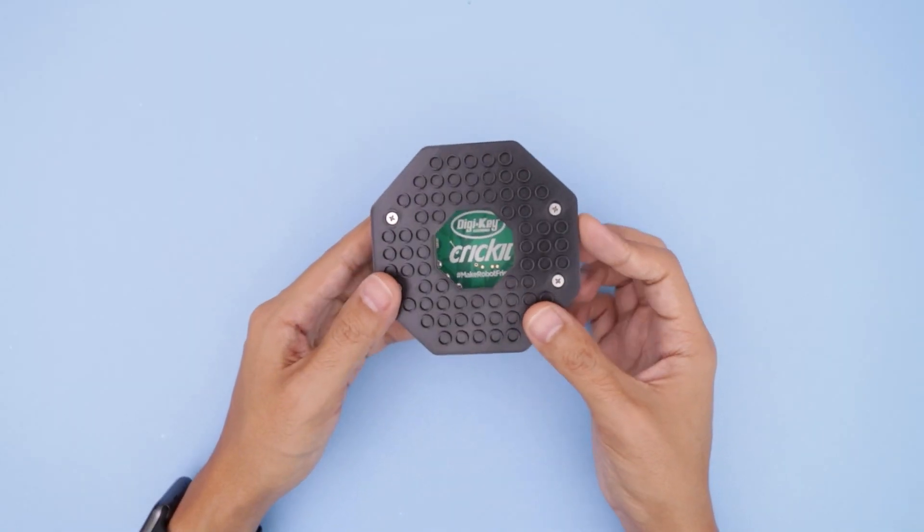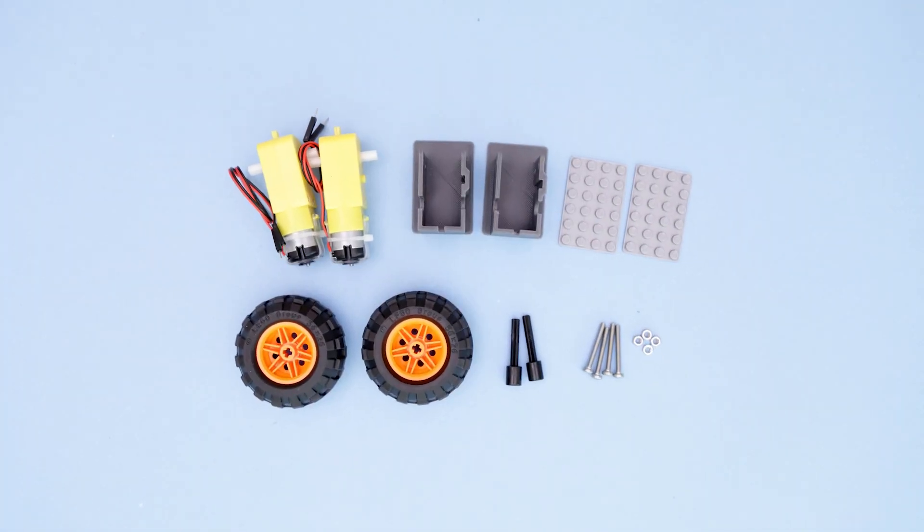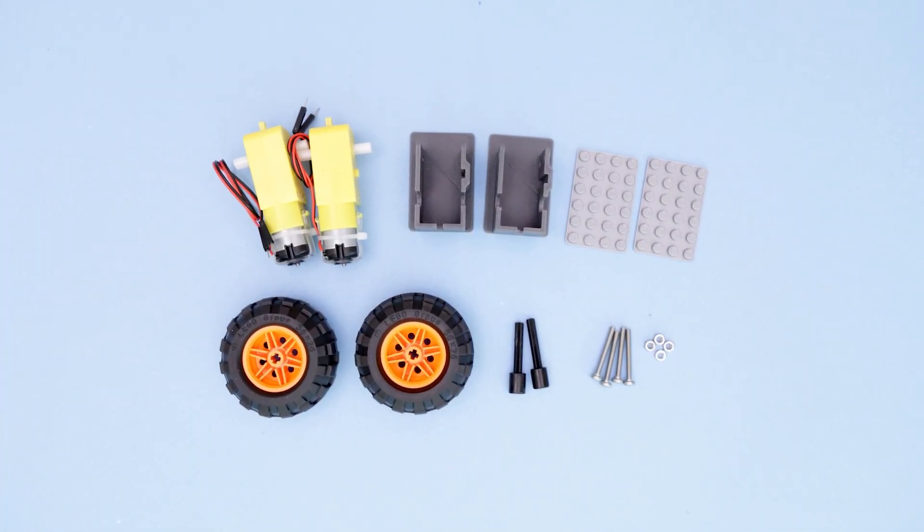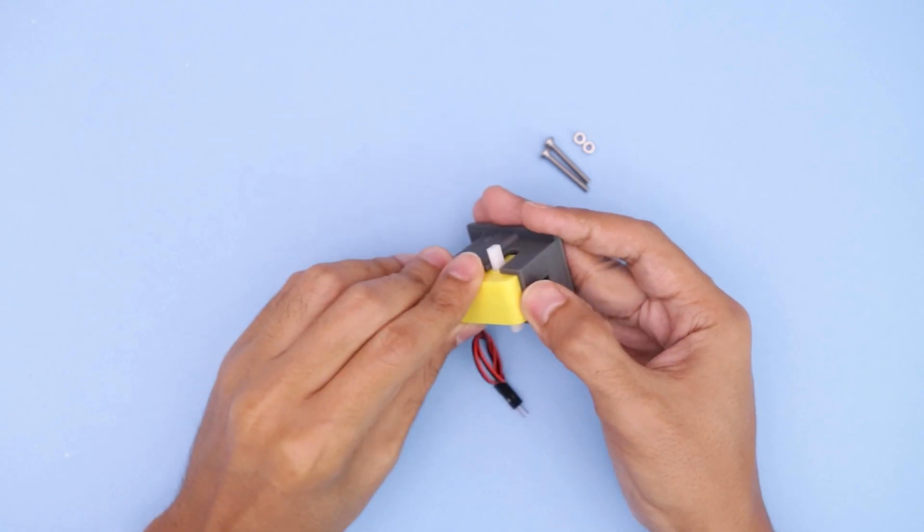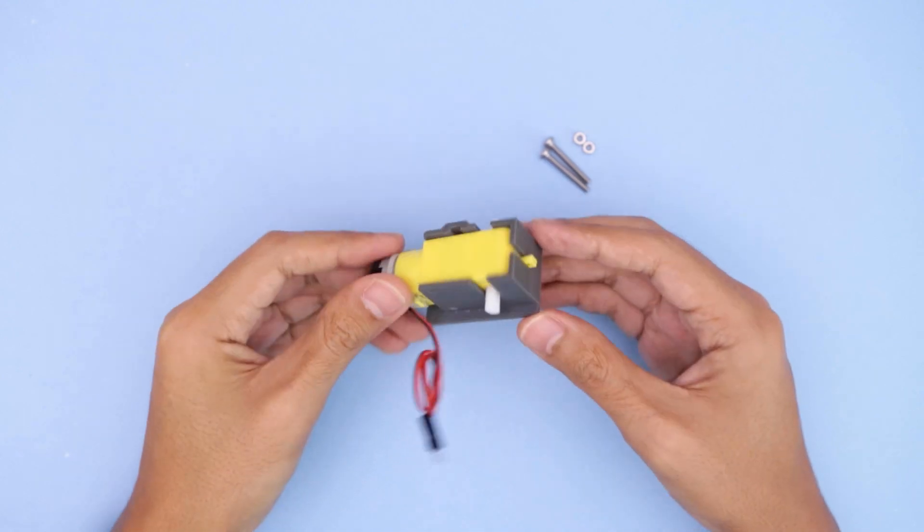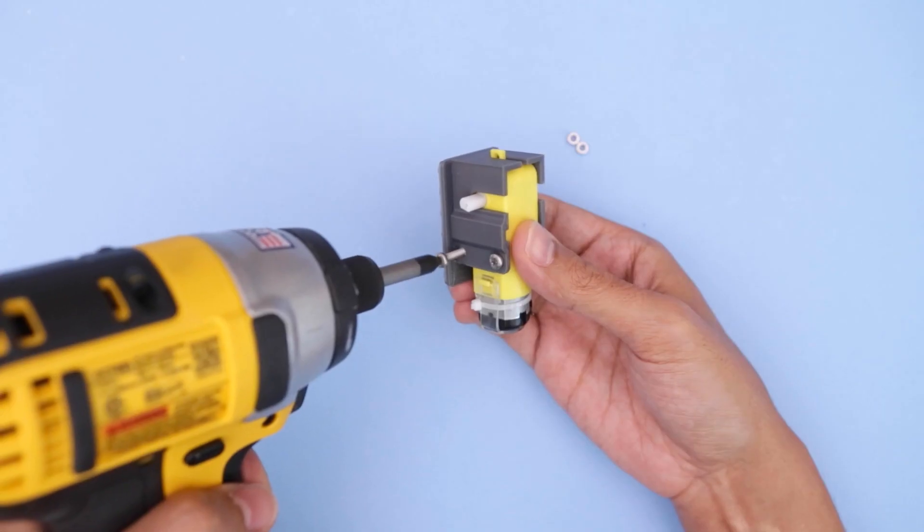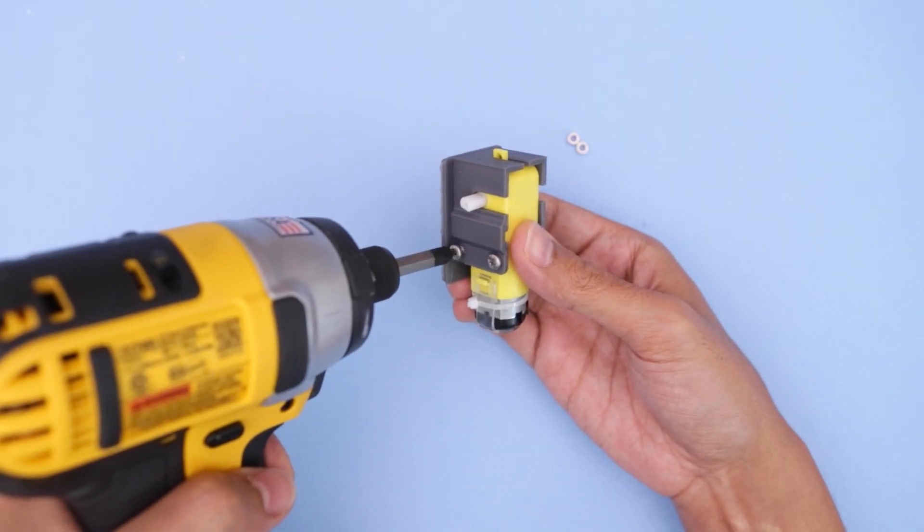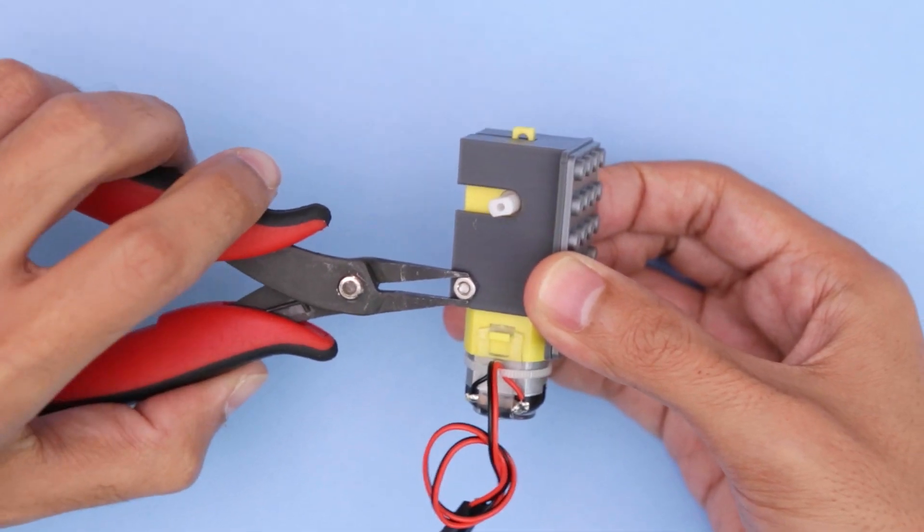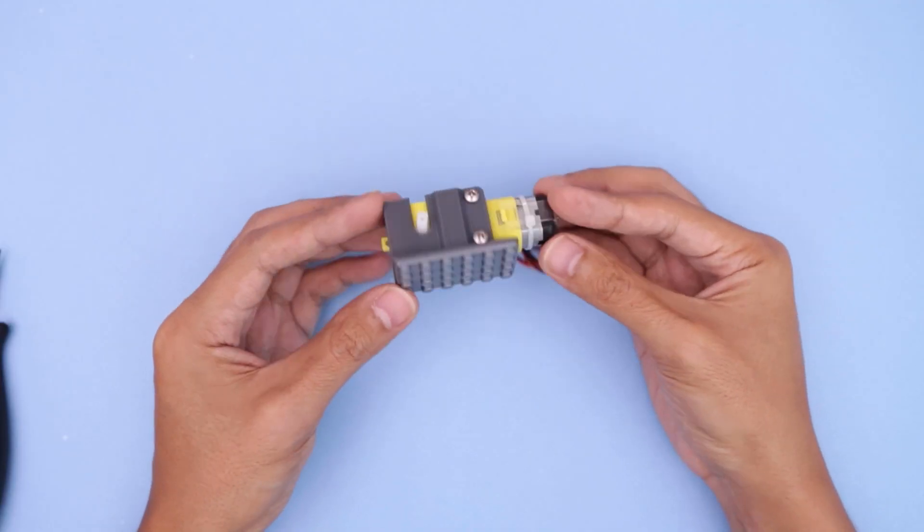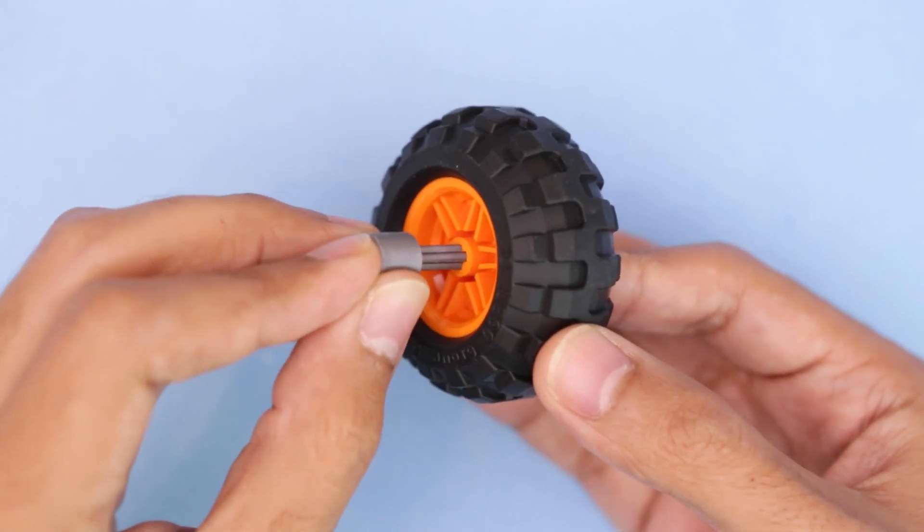We'll need these pieces for building the wheel assembly. The motor press fits into the 3D printed mount and can be secured with hardware. Use an impact drill to speed this up and a hex nut to secure it in place. Next, we'll need to add a rim and tire. This axle press fits into the rim and snaps onto the shaft of the motor.